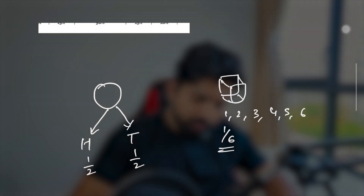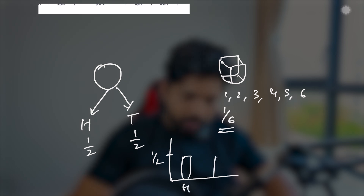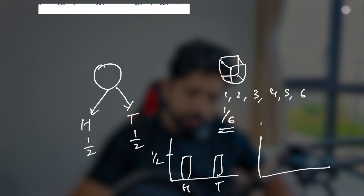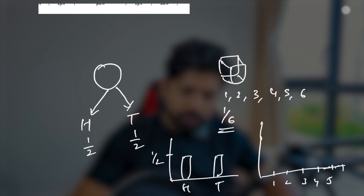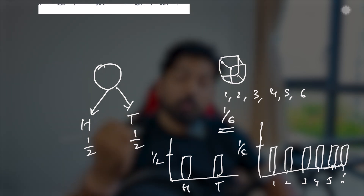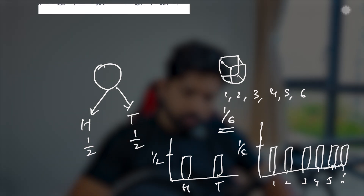When you plot the graph for the coin, it will show one-half for head and one-half for tail. Similarly for the dice, each value from one to six has equal probability. This is the example of uniform distribution, because everything is equal here. But when we talk about normal distribution, we are talking about continuous data.